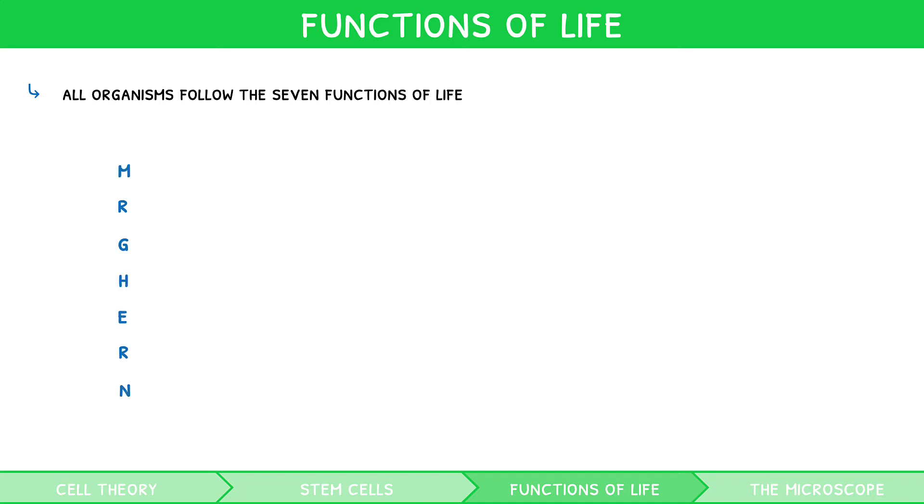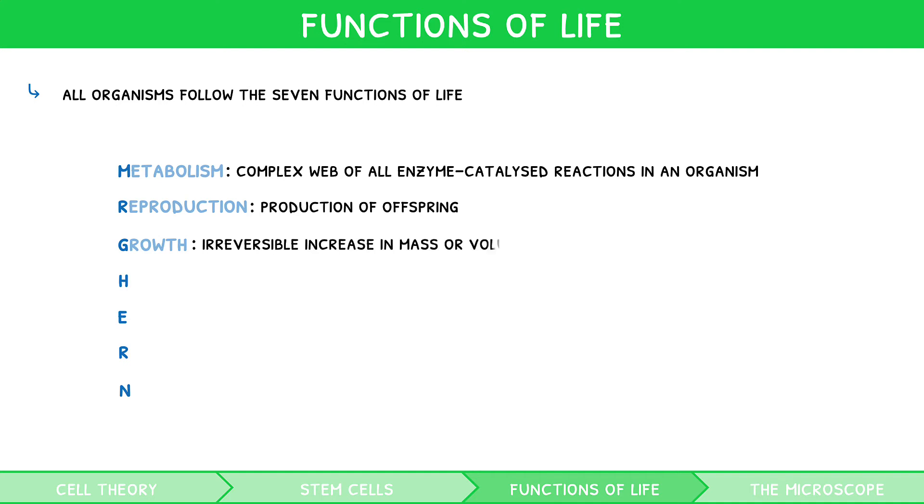In this, M stands for metabolism, the complex web of all enzyme-catalyzed reactions in an organism. R stands for reproduction, the production of offspring. G stands for growth, the irreversible increase in mass or volume.